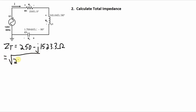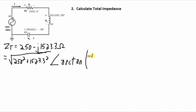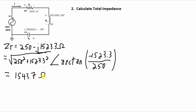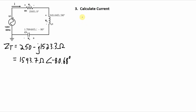The magnitude is the square root of 250 squared plus 1523.3 squared, and the phase angle is the arctan of −1523.3 over 250. That works out to 1543.7 ohms with a phase angle of −80.68 degrees.